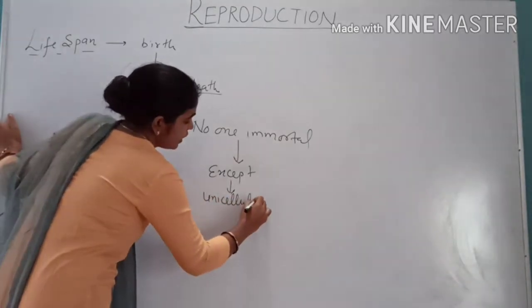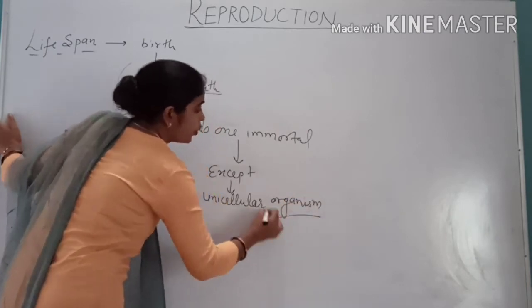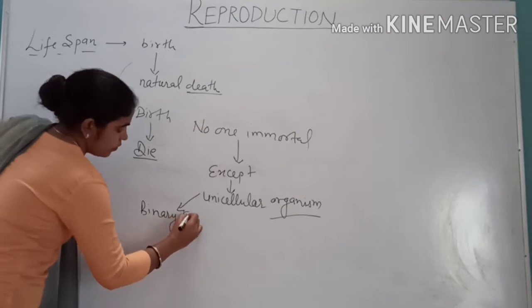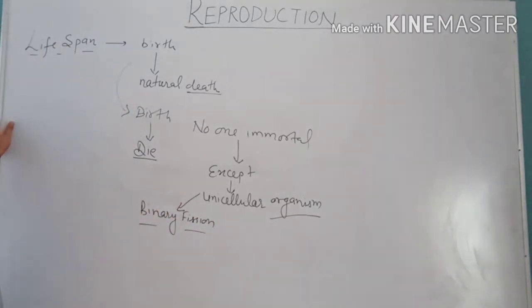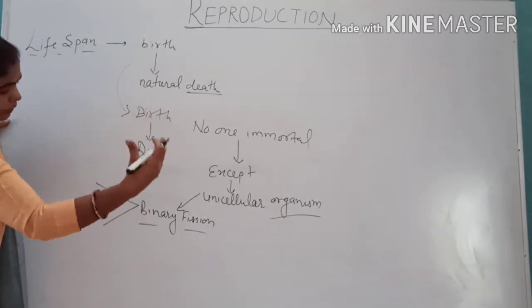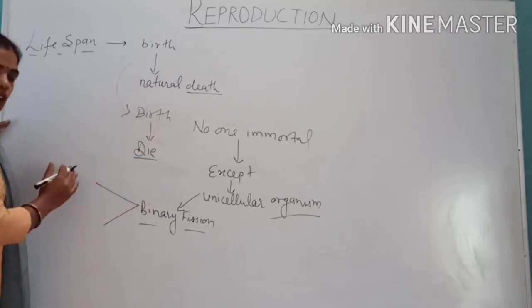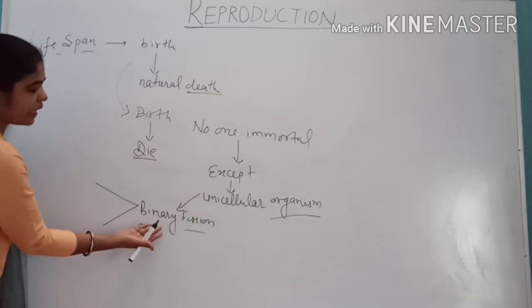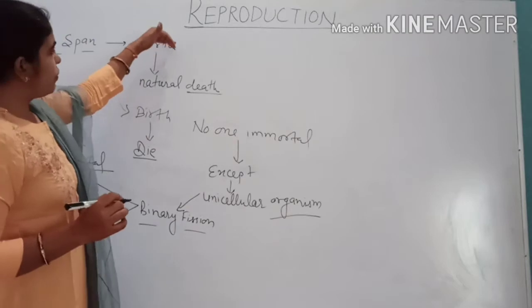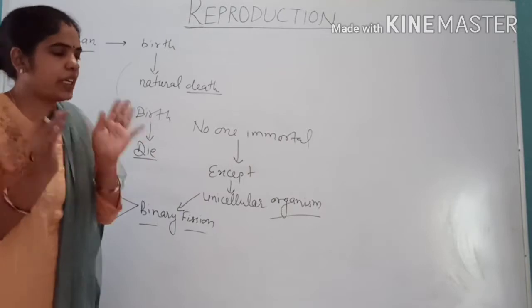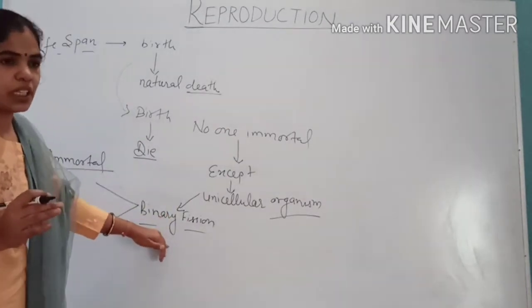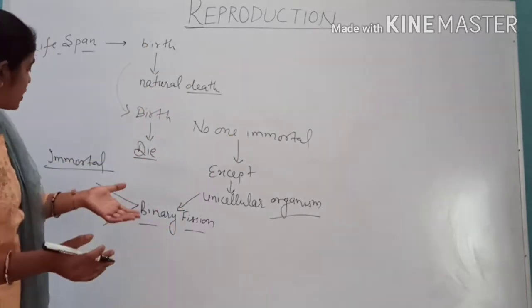In the case of unicellular organisms which reproduce by simple binary fission, there is no natural death. These organisms survive generation after generation in the form of their daughter cells, so these unicellular organisms which reproduce by binary fission are immortal.